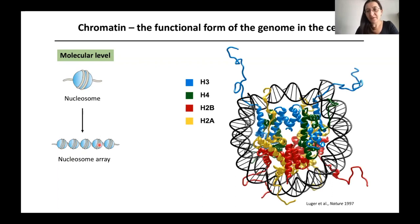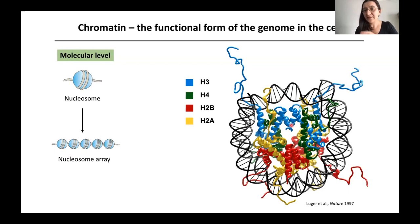Looking at the nucleosome, we know the crystal structure solved in 1997 by Caroline Luger and Tim Richmond. The core consists of four types of histone proteins — H3, H4, H2B, and H2A — with two copies of each. We have this beautifully organized core with DNA wrapped around twice, and what stands out are the long tails of the histone proteins, which are very important in gene regulation.